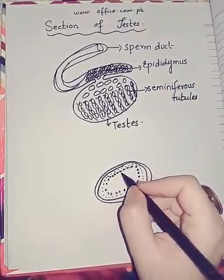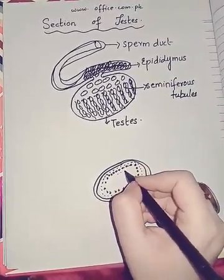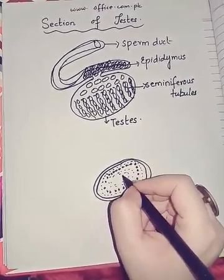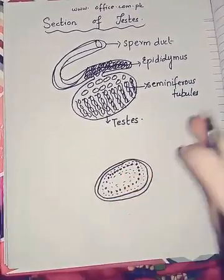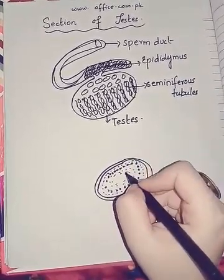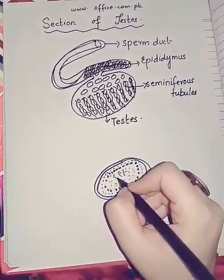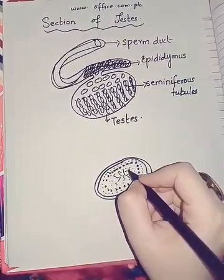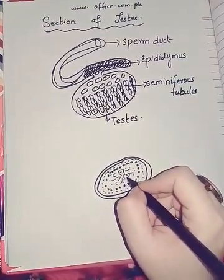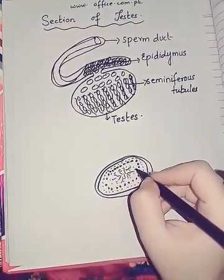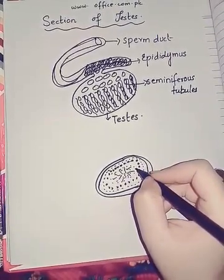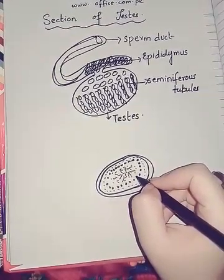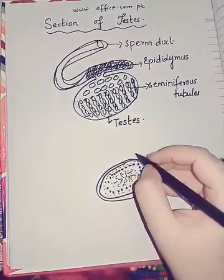These are interstitial cells. Then, this is the lumen. Lumen is the opening of a tube — it is known as lumen. Here is the lumen. These are spermatozoa. And here are sertoli cells, which provide nourishment and protection to the sperms.